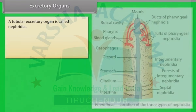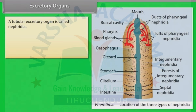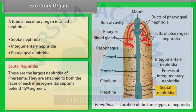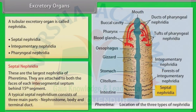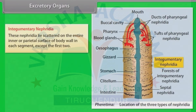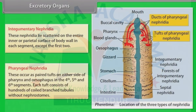Excretory organs: A tubular excretory organ is called nephridium. It is of three types: septal, integumentary and pharyngeal. Septal nephridia are the largest nephridia of Pheretima, attached to both faces of each intersegmental septum behind the fifteenth segment. They consist of nephrostome, body and terminal duct. Integumentary nephridia lie scattered on the inner parietal surface of body wall in each segment except the first two. Pharyngeal nephridia occur as paired tufts on either side of pharynx and oesophagus in the fourth, fifth and sixth segments, each tuft consisting of hundreds of coiled branched tubules without nephrostomes.